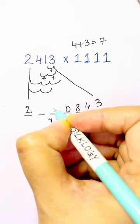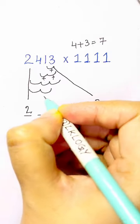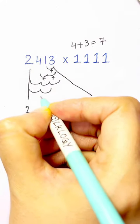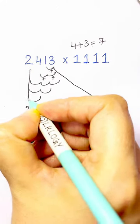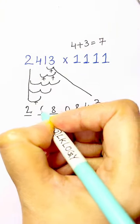7 plus 1 is 8. Next we'll add these two: 4 plus 2, that's 6, and that's your answer.